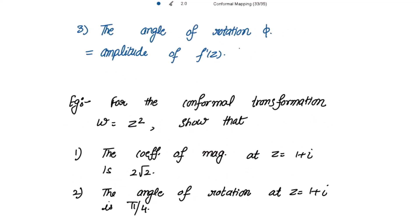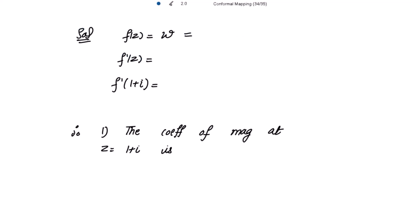Let's do an example. For the conformal transformation w = z², show that the coefficient of magnification at z = 1+i is 2√2, and the angle of rotation at z = 1+i is π/4. We have f(z) = w = z², so f'(z) = 2z. Therefore f'(1+i) = 2(1+i) = 2+2i.